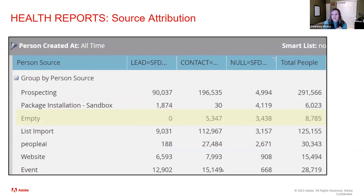Source attribution — that person source field can be a nightmare because it's often a fight between marketing ops, marketing, demand gen, and sales ops about how many person sources there should be. Marketo would like you to believe there are like four — list import, form fills, web pages — but there's obviously going to be a lot more. I like to group people by person source and see how long that list is, to determine if we need to consolidate. I like the report of looking at leads versus contacts versus not in Salesforce at all, because it shows that right now 'person source empty' has no leads — meaning every lead has a person source — but we have a lot of contacts and null records where person source is empty. So it lets us focus on where records are coming in and where we need to troubleshoot.